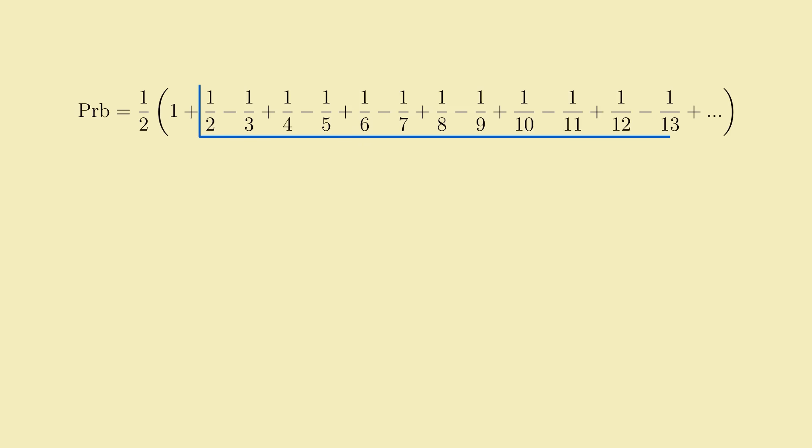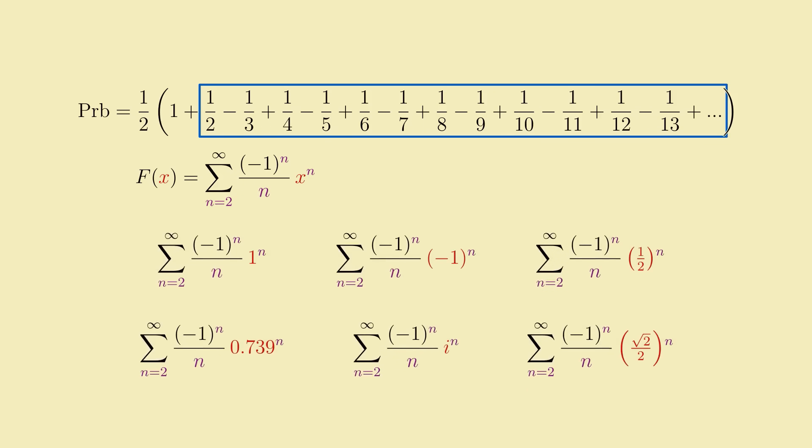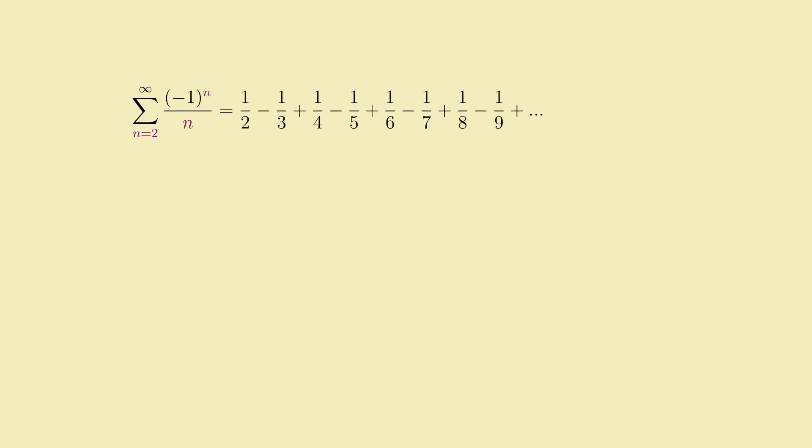Using generating functions to find the value of an infinite sum like this one always feels a bit strange to me, because it seems like we're just making the problem more complicated by inserting an x into the series, and turning it into a function. Because now we're dealing with infinitely many possible series, one for each value of x, instead of just our original single series, which we get for plugging in x equal 1. It's like buying a whole house just to get the hose that's attached to it. Seems like overkill. Except that's the weird thing about math. Sometimes solving a general problem is easier than solving a specific case of that problem. And generating functions are a pretty good example of that.